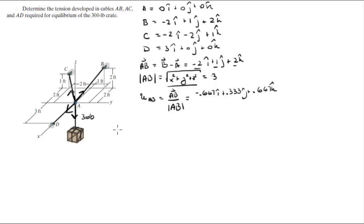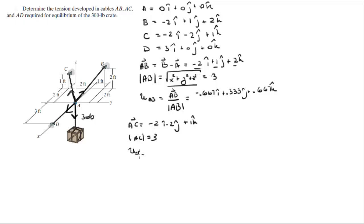In the same manner we find unit vector AC. AC is -2i - 2j + 1k. The magnitude of AC is also 3, and the unit vector in the AC direction is -0.667i - 0.667j + 0.333k.